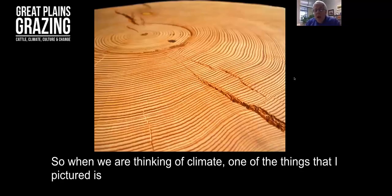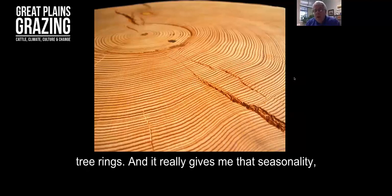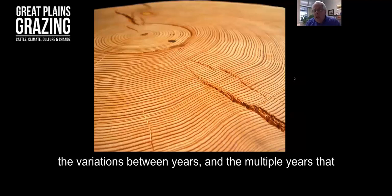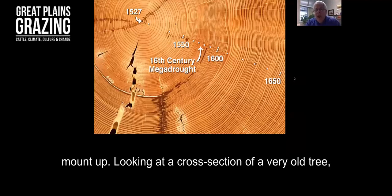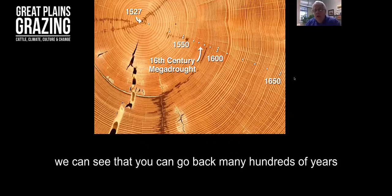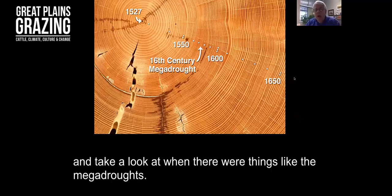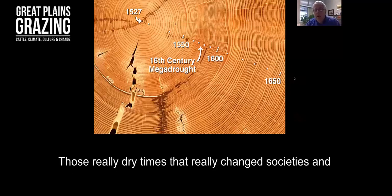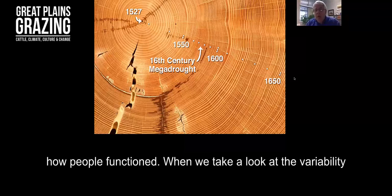When we're thinking of climate, one of the things that I picture is tree rings, and it really gives me that seasonality, the variations between years and the multiple years that mount up. Looking at a cross-section of a very old tree, we can see that you can go back many hundreds of years and take a look at when there were things like the mega droughts, those really dry times that really changed societies and how people function.